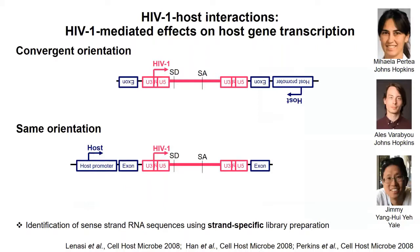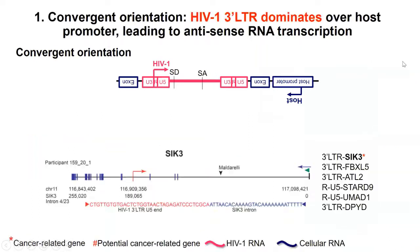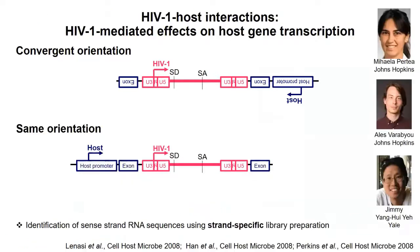We think about HIV-host interactions and how these oncogenes interact with the genome. We collaborated with Myela Pratia and Alice to look at these HIV integration sites. They gave us 200 integration sites through bioinformatic analysis, and then Jimmy (my postdoc) and I looked at them by eye using a genome browser, NCBI blast, to see the exact junctions and make sure these are authentic integration sites, not artifacts from bioinformatic pipelines. Using a strand-specific library preparation method, we can identify the positive-sense RNA and know whether it's HIV or the host driving the transcription.